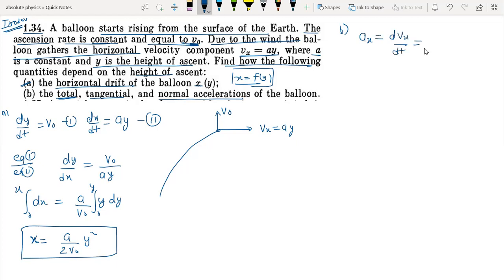Since a is constant, we get a times dy by dt. This dy by dt is also constant v0. So ax equals av0.